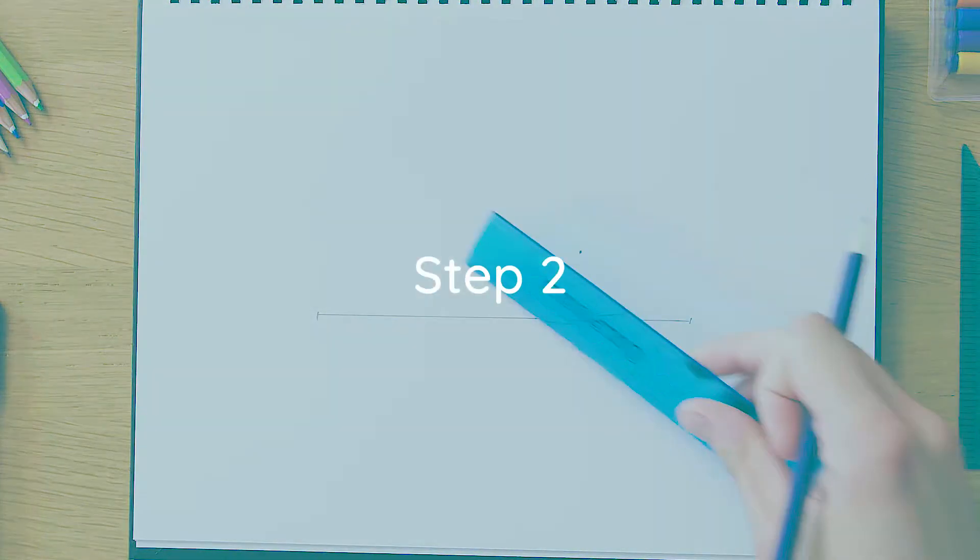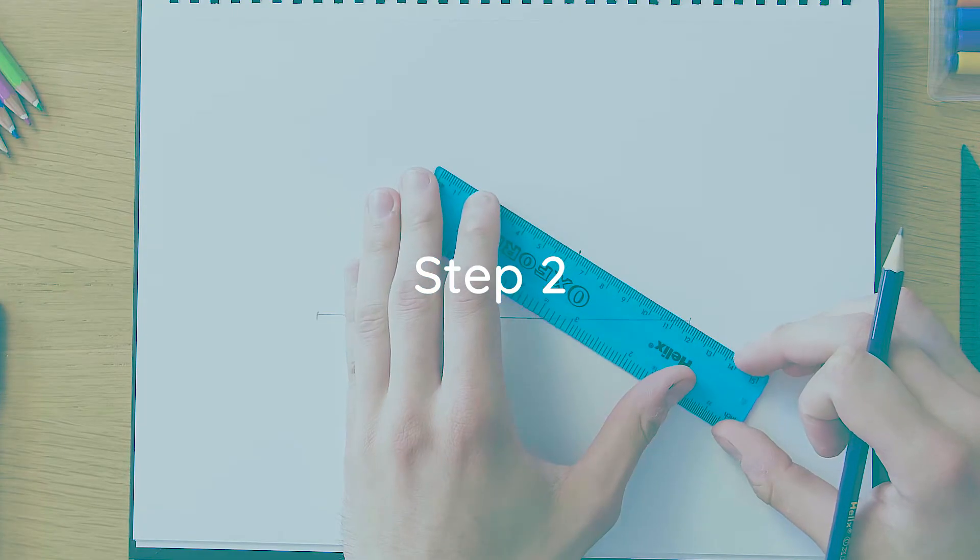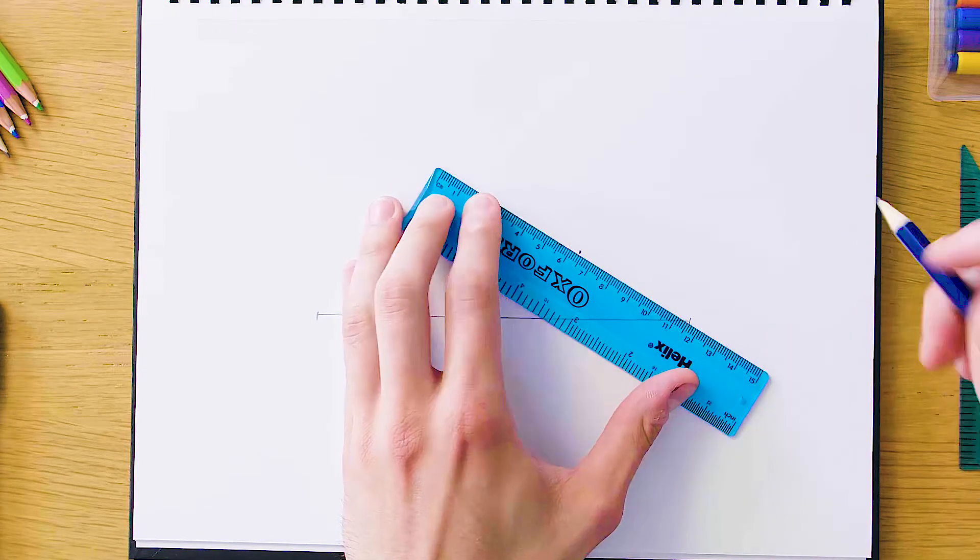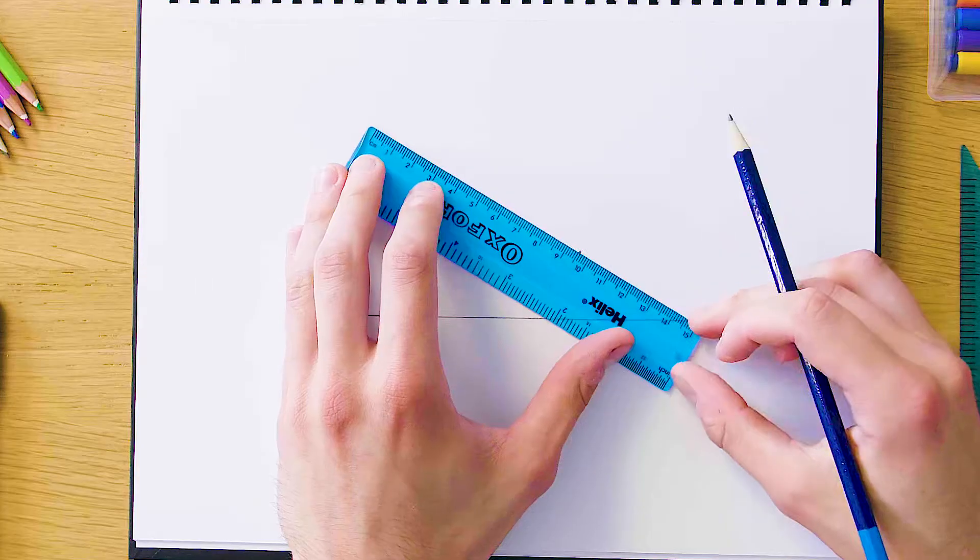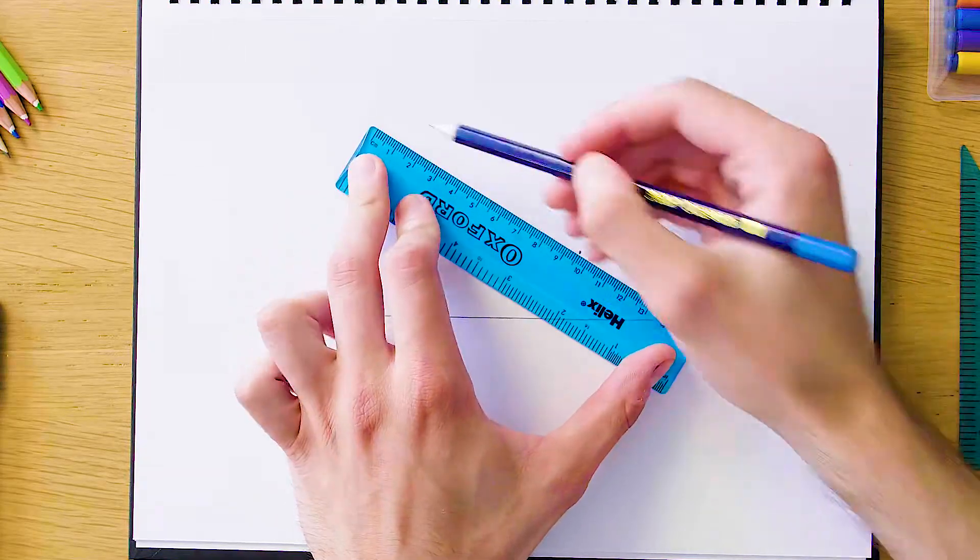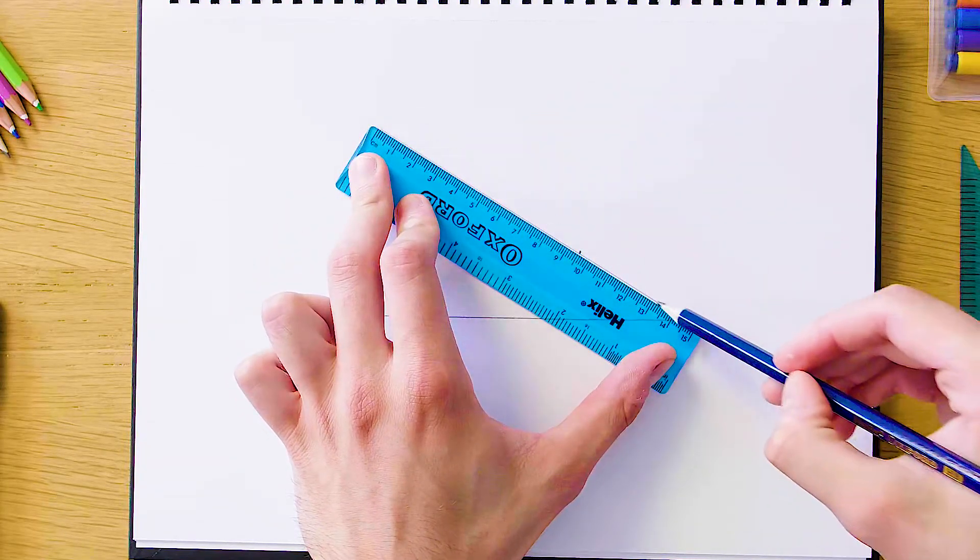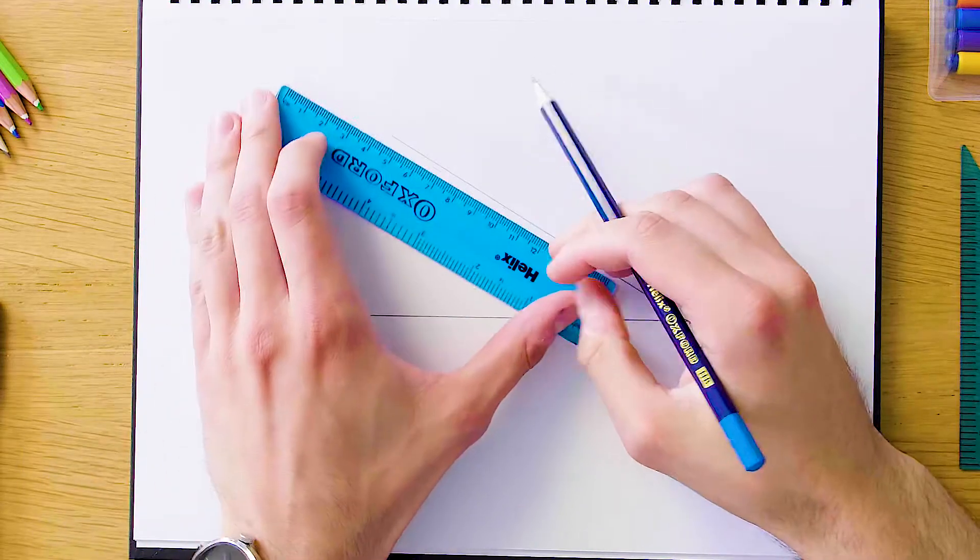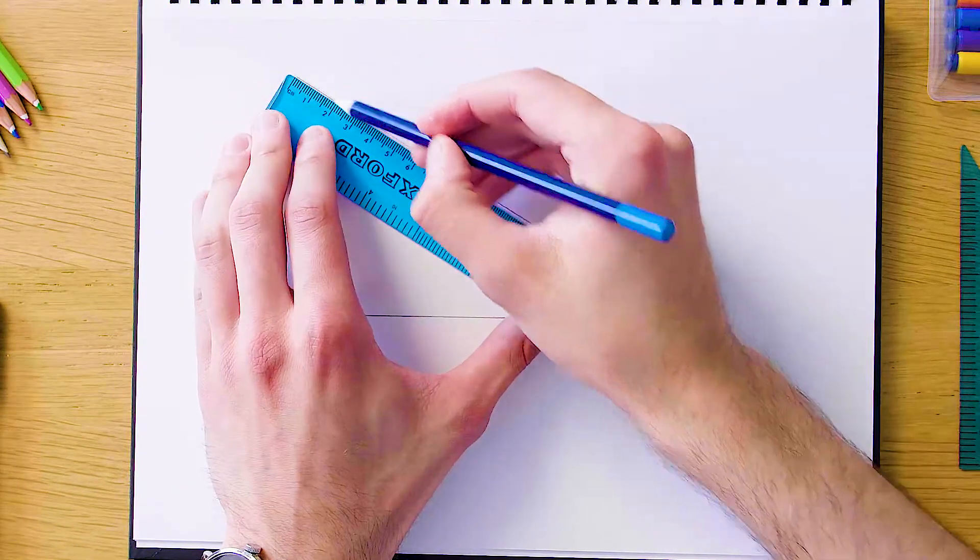And the next step is going to be to connect our far vertices on the right to this 30 degree mark to create our line, so our construction line. We're going to make this nice and long to make sure it's long enough to connect on the left as well. So it's going to look like this and it's going to go a bit further for us. So up here.